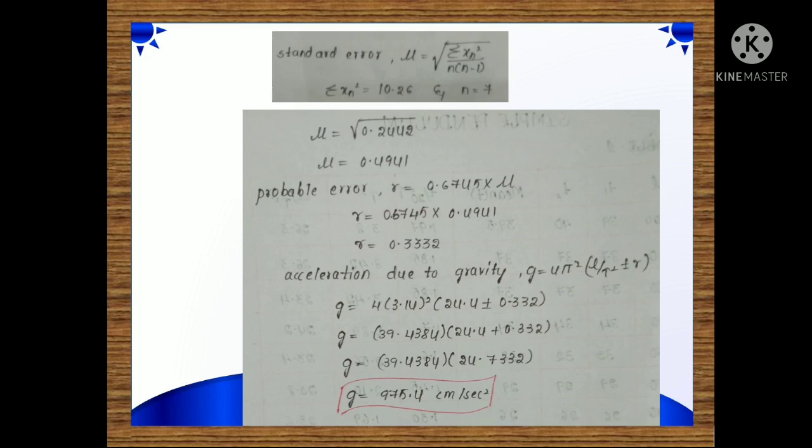Next, write down the result. The result is: we have calculated the errors and estimated the standard error and probable error, and also estimated the acceleration due to gravity. Thank you.